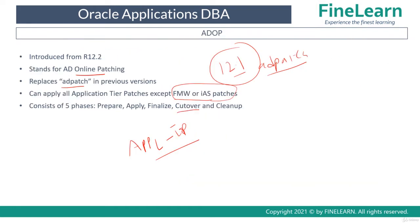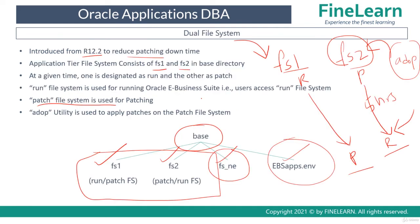The overall downtime of five hours is now brought down to only 10–15 minutes — the time it takes to flip the file systems. This flip is the cutover phase, and it typically takes no more than 15–20 minutes. In previous releases, the entire five hours of patching kept the whole system down, but in release 12.2, because of the dual file system, patching happens on the patch file system with no impact on end users or business operations.